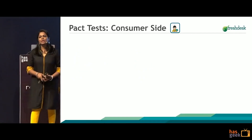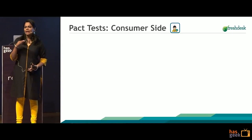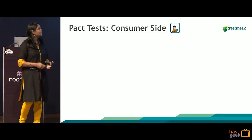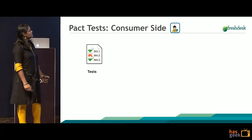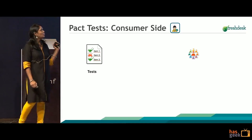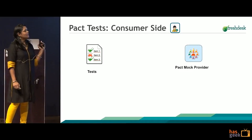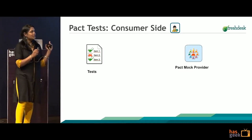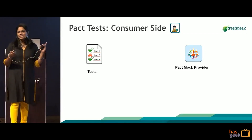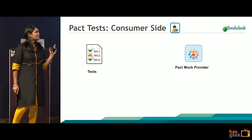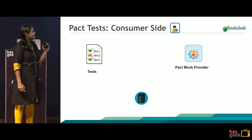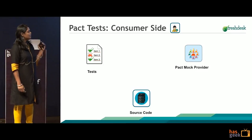Let me take you through what happens on the consumer side and what happens on the provider side — how these tests are actually implemented. On the consumer side, we have a bunch of tests — these are actually the PACT tests. What do they do? They actually start a mock PACT provider. In our case, the provider is the Activities Service, so it actually starts a mock provider for activities.